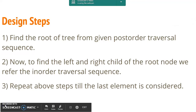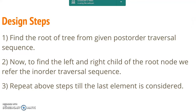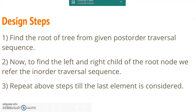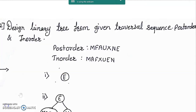Once we get the root node, to find the left child and right child of the root node we have to refer to the in-order traversal sequence given to us. At last, we repeat all the above steps till the last element is considered. This is the three-step algorithm that we use to design a binary tree from given in-order and post-order traversal sequence.